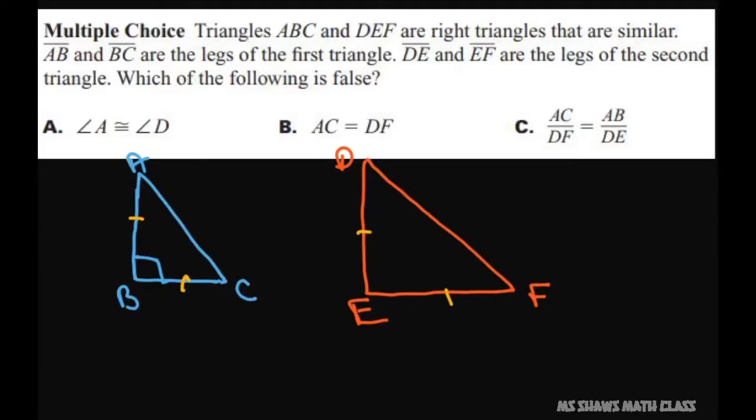All right, so we know that they are right triangles and that they're similar. So what we know is that angle A is congruent to angle D. Triangle ABC, which is this one, is to DF. We're just trying to match it up.